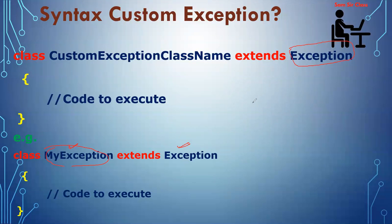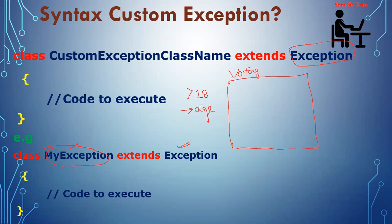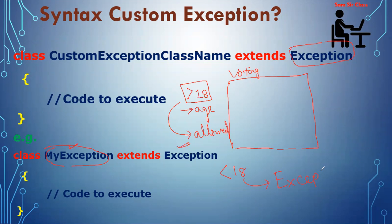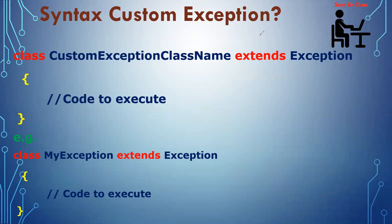One example I will discuss: suppose you are given a task to design an application for voting. As we all know, voting is allowed only when you are above 18 years of age. Whenever anyone comes for voting, they enter their age. If the age is greater than 18, they will be allowed for voting. If the age is less than 18, an exception will be generated — a custom exception — and an error message will be given to the user. We will not use any predefined exception class; we will write our own exception class.